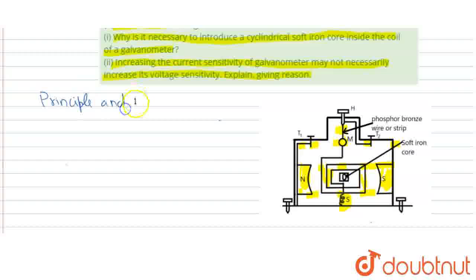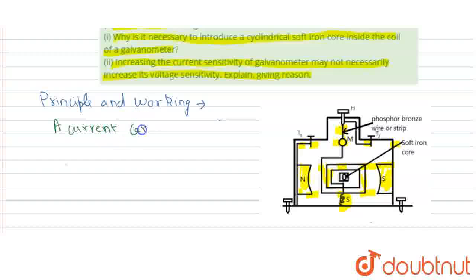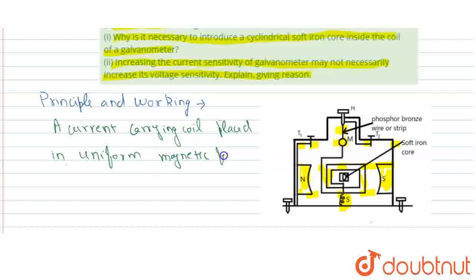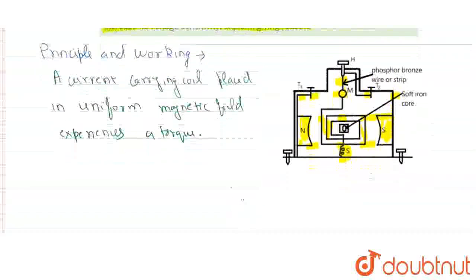Principle and working. The basic principle used here is that a current-carrying coil, when placed in a uniform magnetic field, will experience a torque.